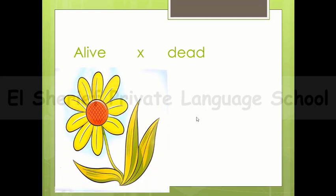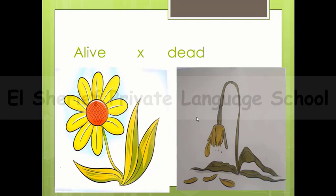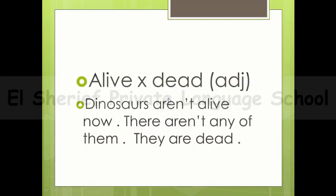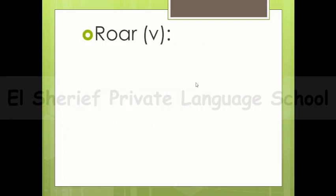The words alive and dead — they are two opposite adjectives. From the first picture, you can see a flower and it's alive, meaning it's not dead — you water it every day. But from the second picture, we don't care about this flower, so it's dead. The dinosaurs are dead; there aren't any of them now.